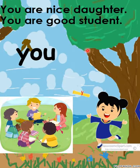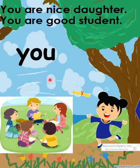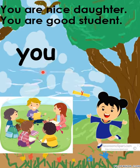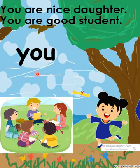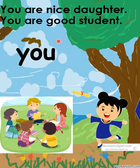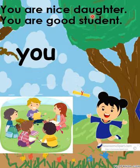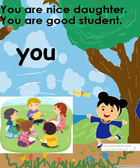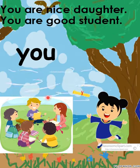The next one is 'you' — Y, O, U. 'You' means 'awak'. We use it when talking about another person. Example sentences: You are a nice daughter. You are a good student.